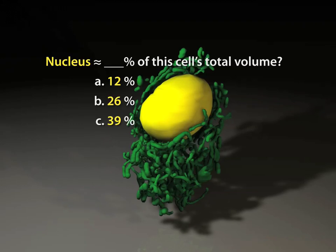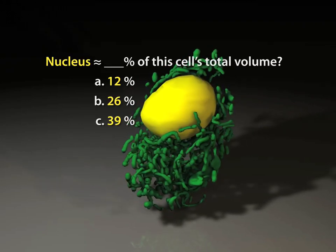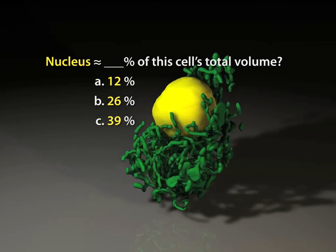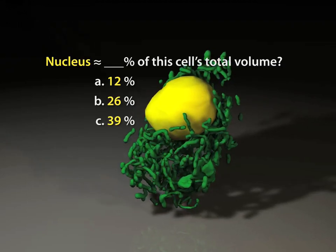For example, approximately how much of the cell's total volume do you think that this yellow nucleus occupies? About 12%, 26%, or about 39%?